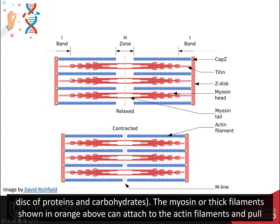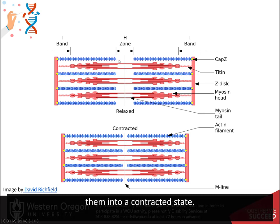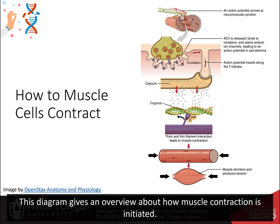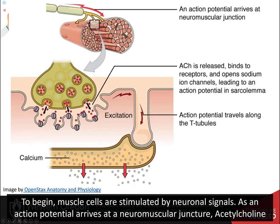The myosin, or thick filament shown in orange above, can attach to the actin filaments and pull them into a contracted state. This diagram gives an overview of how muscle contraction is initiated. The muscle cells are stimulated by neuronal signals, and an action potential arrives at a neuromuscular junction.